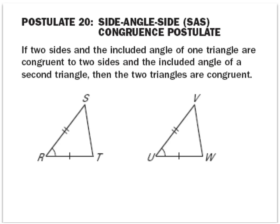Now, we've already discussed that in order to have congruent triangles, you have to have six parts — all of the sides and all of the angles must be congruent. But in this lesson, you're going to learn a bunch of different ways where we only need three given pieces of information to decide that the triangles are congruent. So the first one we're going to look at is the side-angle-side congruence postulate, and we denote that by SAS.